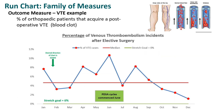This next chart is the outcome measure. It looks at the percentage of VTE incidents after elective surgery in orthopaedics. They did some PDSA cycles in June, and this has resulted in a downward trend. Before the team could celebrate, they also need to look at the balancing measure.